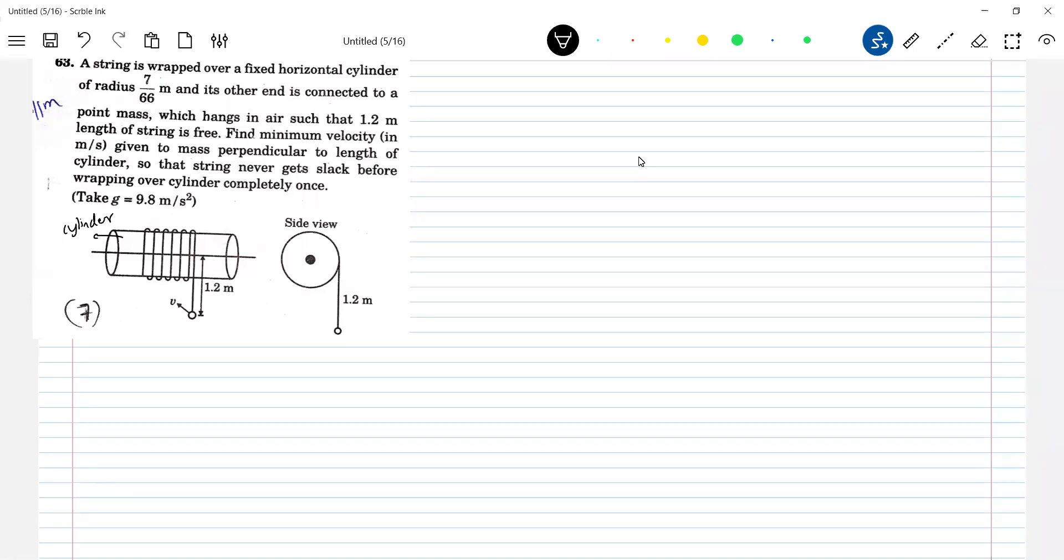Okay, now string is wrapped here. So what you're seeing? Find the minimum velocity given to mass, perpendicular to length of the cylinder, so that string never gets slack before wrapping over cylinder completely. 7 by 6 meter radius of cylinder is how much? 7 by 6 meter, it will come approximately 0.11 meter. And its other end is connected to point mass.